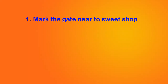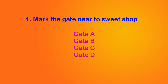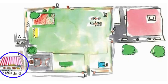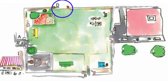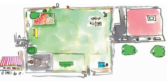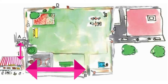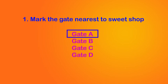Firstly, mark the gate nearest to the sweet shop. The given options are gate A, gate B, gate C, and gate D. Observe the sweet shop's distance from gate A and from gate B. Gates C and D are far away from the sweet shop compared to gates A and B. The distance between the sweet shop and gate A is lesser than the distance between the sweet shop and gate B. Therefore, gate A is nearest to the sweet shop.